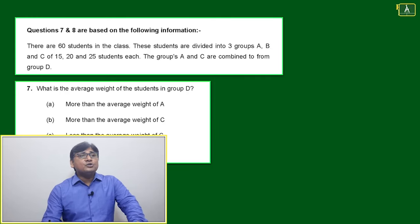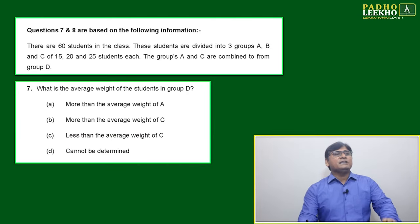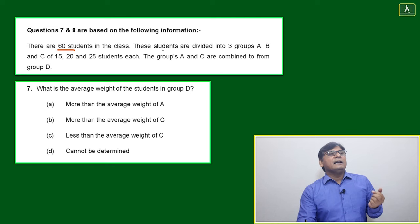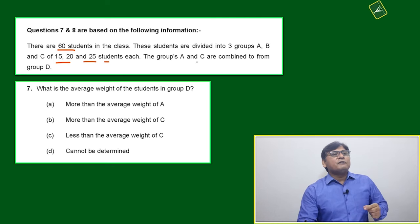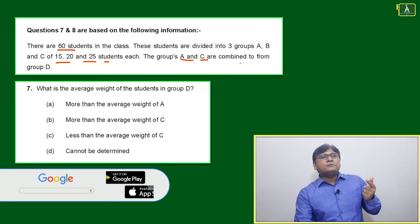Now we'll come to the next question - question number seven and eight - based on the same information. There are 60 students in class. These students are divided into three groups: 15, 20, and 25 students in the groups.